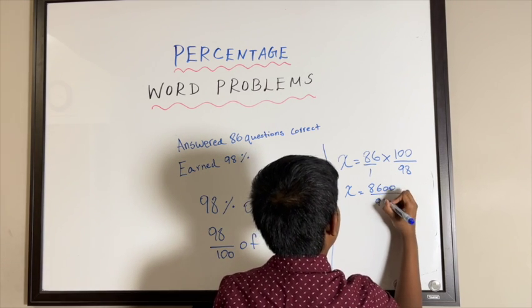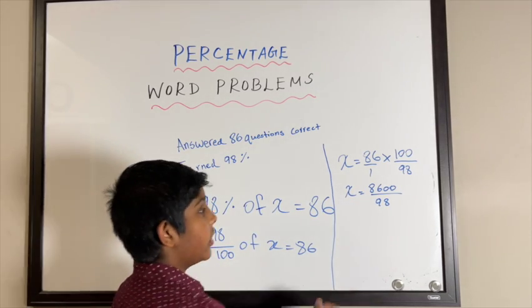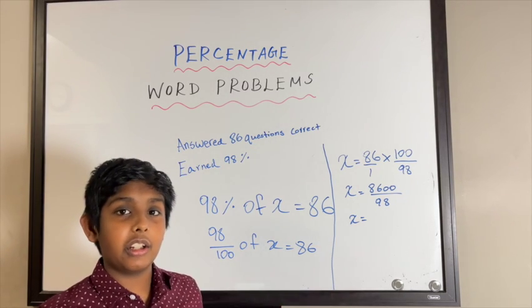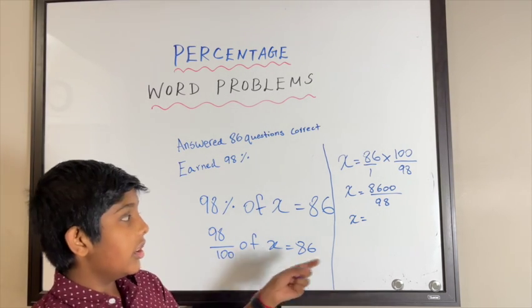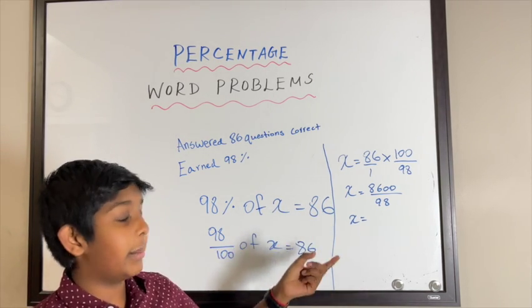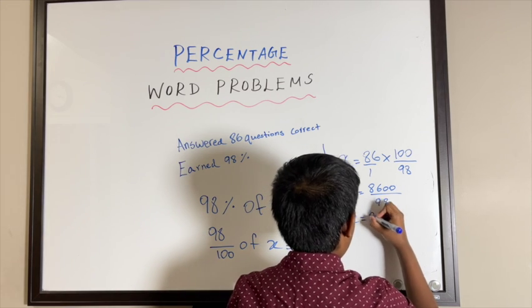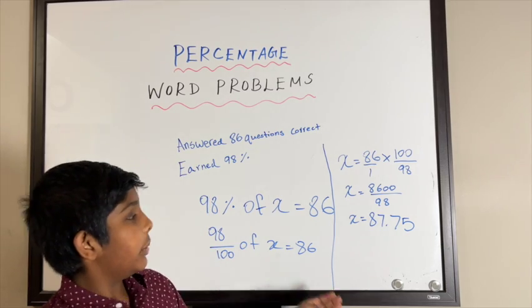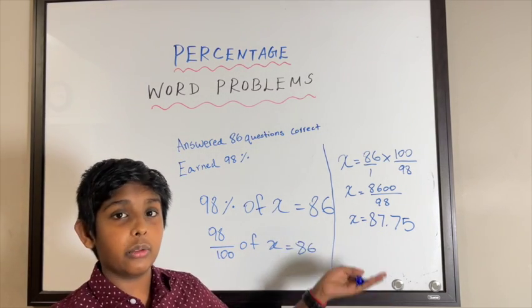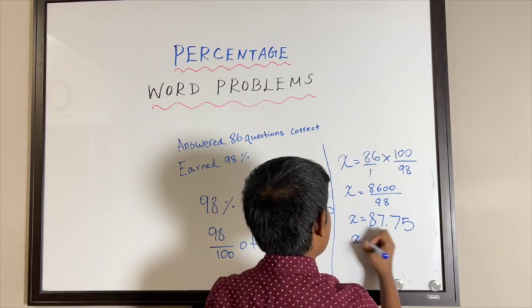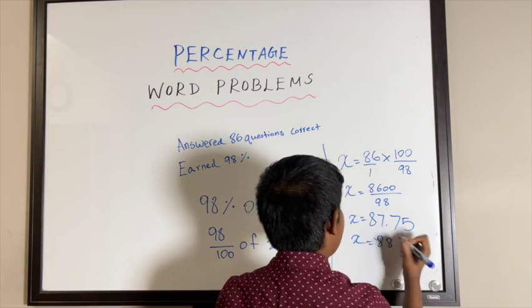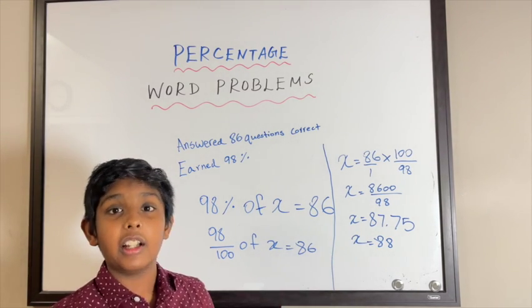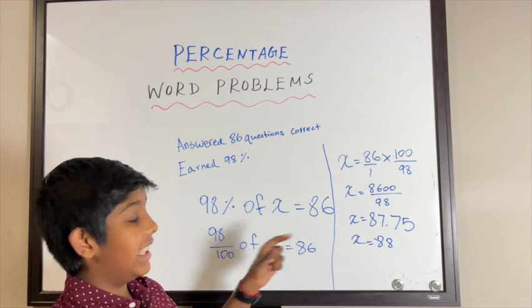Now we have to divide it. You can use a calculator or you can work it out by yourself. So 8600 divided by 98 is 87.75. Then we can round this to a whole number, which is 88. So our mystery value is 88. So out of 88 questions, the student answered 86 correctly.